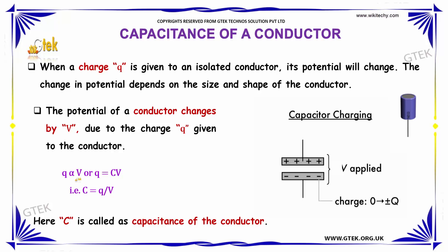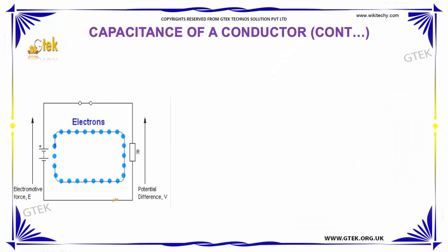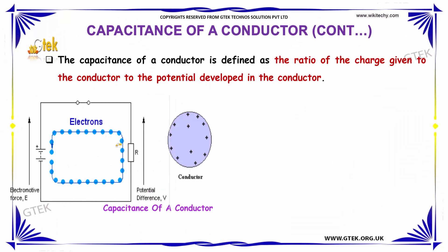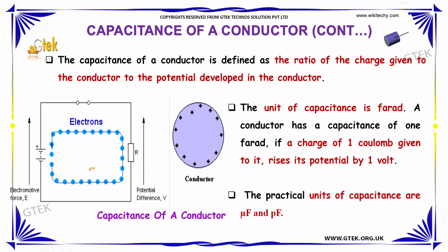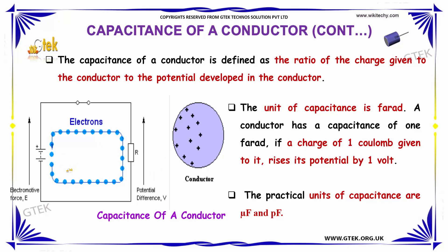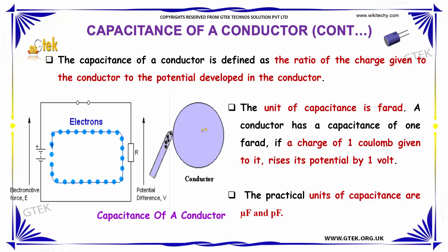V is indicating the voltage, Q is indicating the charge, and C is the capacitance of a conductor. In terms of the capacitance of a conductor, it is defined as the ratio of the charge given to the conductor to the potential developed in the conductor.